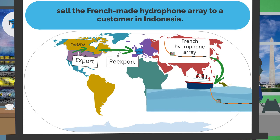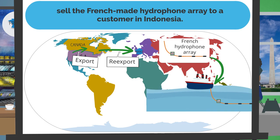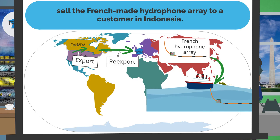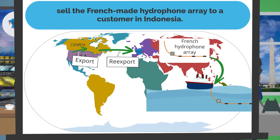As Elsa speaks, a screen appears with a map of the world. A blue text bubble notes the U.S. origin integrated circuit was exported from the United States to Canada. Green arrows point from the United States to Canada and from Canada to France, with the integrated circuit following along. Text boxes label the U.S.-to-Canada arrow as Export and the Canada-to-France arrow as Re-export. The bubble then notes the integrated circuit will be incorporated into a hydrophone array, and François will sell the French-made hydrophone array to a customer in Indonesia, with another green arrow and Re-export label pointing to Indonesia.